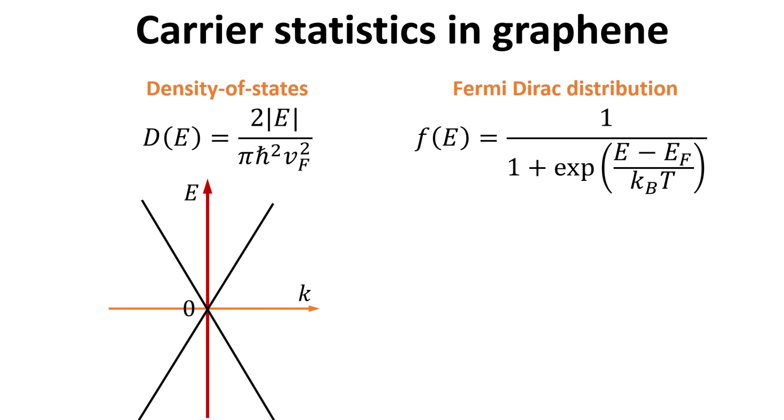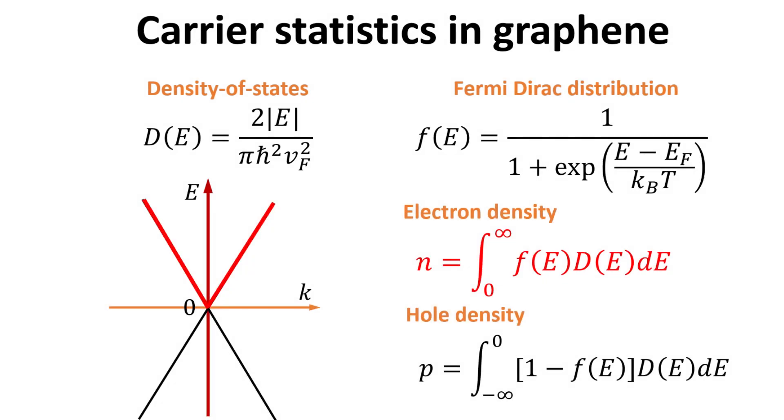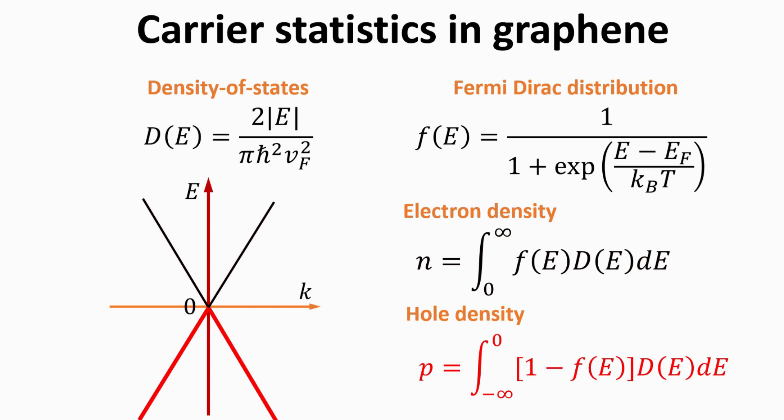Let's collect the results. We have derived the density of states d. The Fermi-Dirac distribution function, f, is as shown. The electron density, n, is given by the product of f and d, integrated over the conduction band. The hole density, p, is given by the product of 1 minus f and d, integrated over the valence band. The calculations of n and p can be performed numerically.